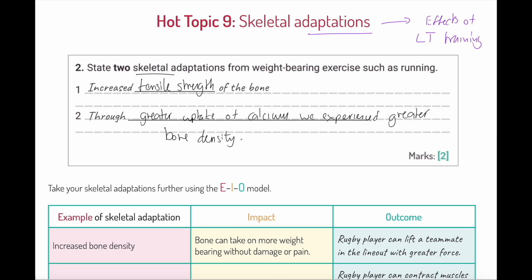One of the things I've just done here is I've made sure that I've not left information and knowledge in my mind. Notice what I've done: I've got my key phrase tensile strength circled—that's one mark. Down here, through greater uptake of calcium, I've got greater bone density—that's my key terminology. But I know it's from calcium uptake, so I'm getting that into my answer. That's how I pick up my two marks.